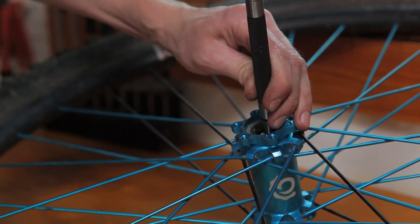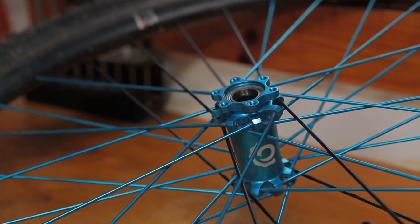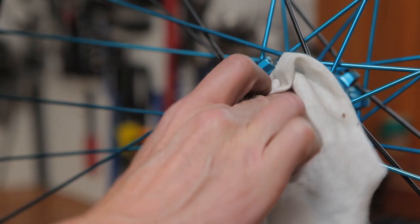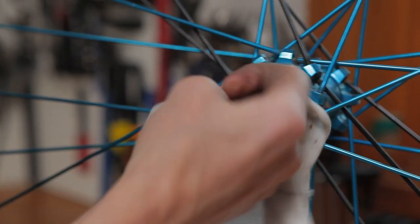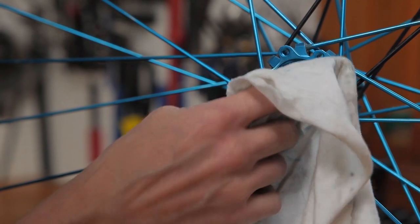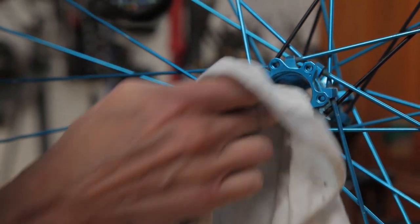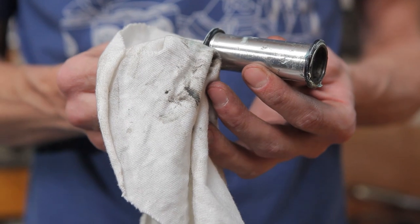Tap the bearing on each side to remove it as straight as possible. With both bearings removed, clean the hub shell. Clean your axle spacer and corresponding O-rings.